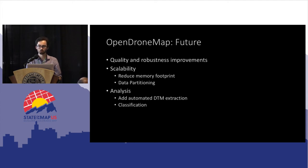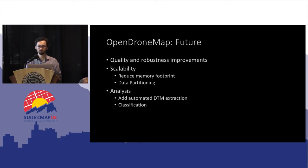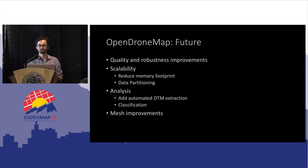We want to do more analysis, and this is where we're seeing a lot of changes right now: automated DTM extraction, classification of the point cloud to get ground versus non-ground, digital surface models, and digital elevation models. Both DSM and DEM are in the pipeline — you can run them right now — but we're working on improving them. We're also working on mesh improvements: those meshes were a bit blobby, and we want flat surfaces to actually be flat.